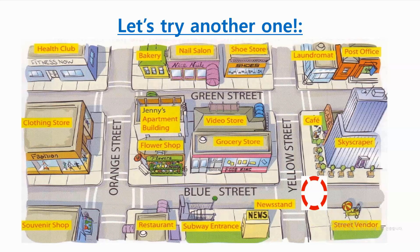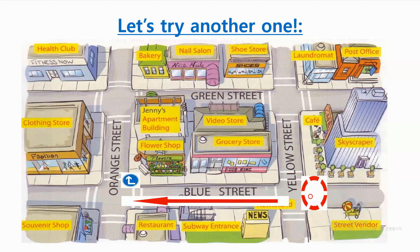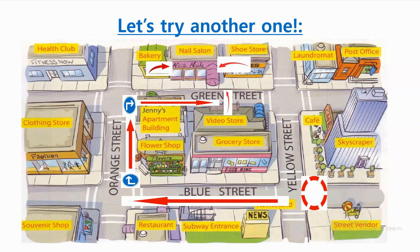It is across from the video store, between the shoe store and the bakery. Did you find it? Let's try it together. Starting at the circle, we go one block down Blue Street and turn right onto Orange Street. We go one block and turn right at Jenny's apartment building. We then go half a block down Green Street. It is across from the video store, between the shoe store and the bakery. Our final destination is the nail salon.